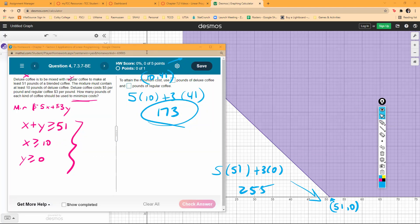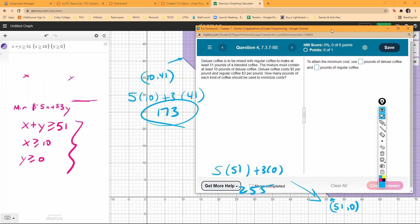If I come back here where I can see it, the minimum cost in this case is to use 10 pounds of deluxe and 41 pounds of the regular coffee.